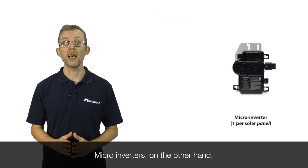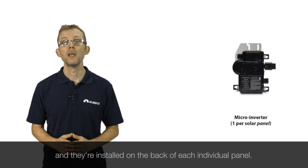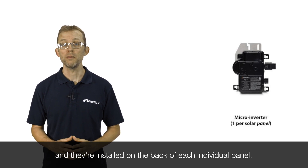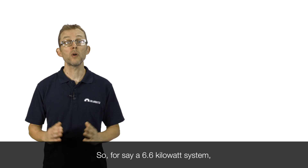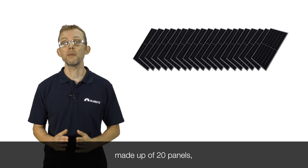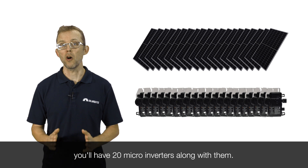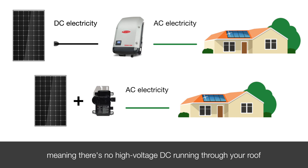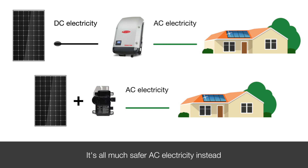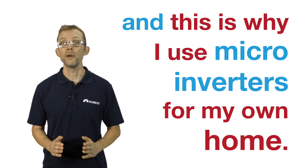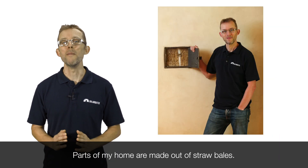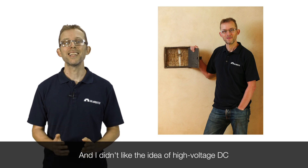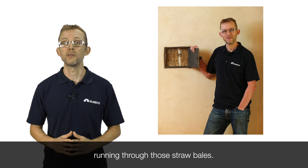Micro-inverters, on the other hand, are the size of small paperback books, and they're installed on the back of each individual panel. So for a 6.6kW system made up of 20 panels, you'll have 20 micro-inverters. Micro-inverters convert DC to AC at the source, meaning there's no high voltage DC running through your roof at any point in time — it's all much safer AC electricity instead. And this is why I use micro-inverters for my own home. Parts of my home are made out of straw bales — seriously — and I didn't like the idea of high-voltage DC running through those straw bales.